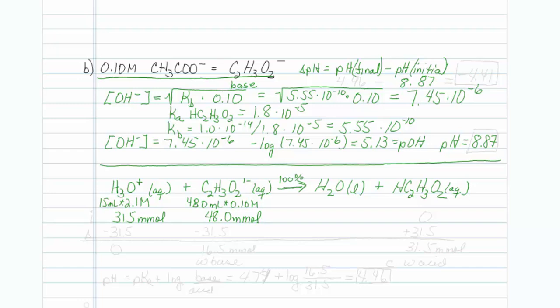You can check me if you want. Take the K of the reacting acid over the K of the produced acid. You'll find out it's pretty big. So we are once again going to treat this like a limiting reagent problem. Minus 31.5, minus 31.5, and plus 31.5. So that is zero. This is 31.5, and 48.0 minus 31.5 gives me 16.5 millimoles.